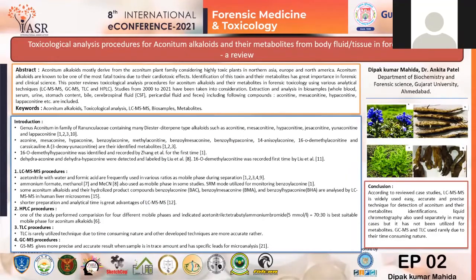Some of the metabolites are also reported, including aconitine, mesaconitine, hypoaconitine, benzoyl-aconitine, methyl-aconitine, benzoyl-mesaconitine, benzoyl-hypoaconitine, and pyro-anisoylaconitine and cassiline-A also.